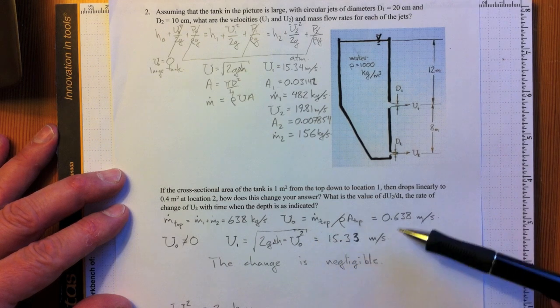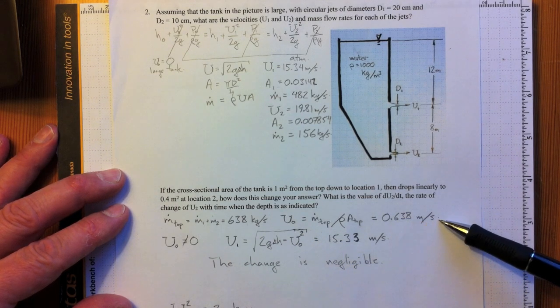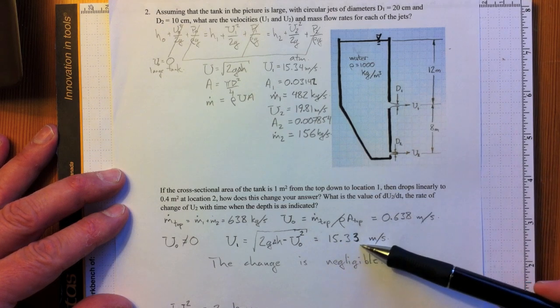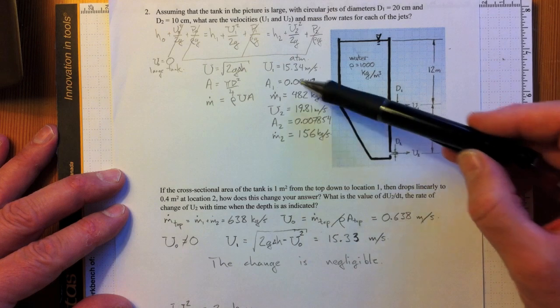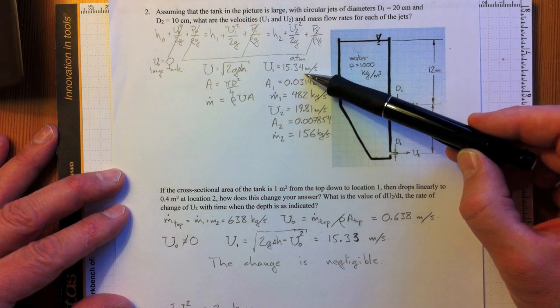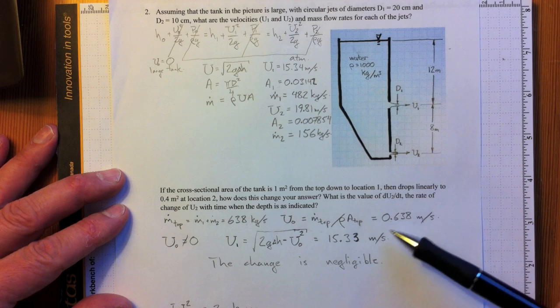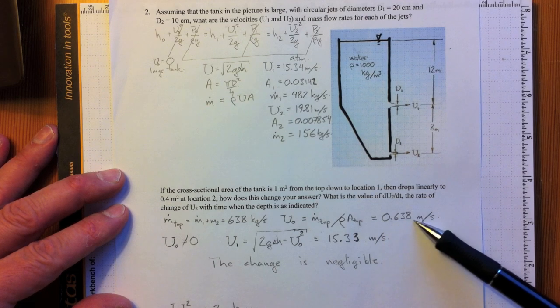Do that calculation and even with 0.638 meters per second, we wind up with U1 equal to 15.33 meters per second as compared to 15.34. So the change really is negligible even though this velocity is fairly significant.